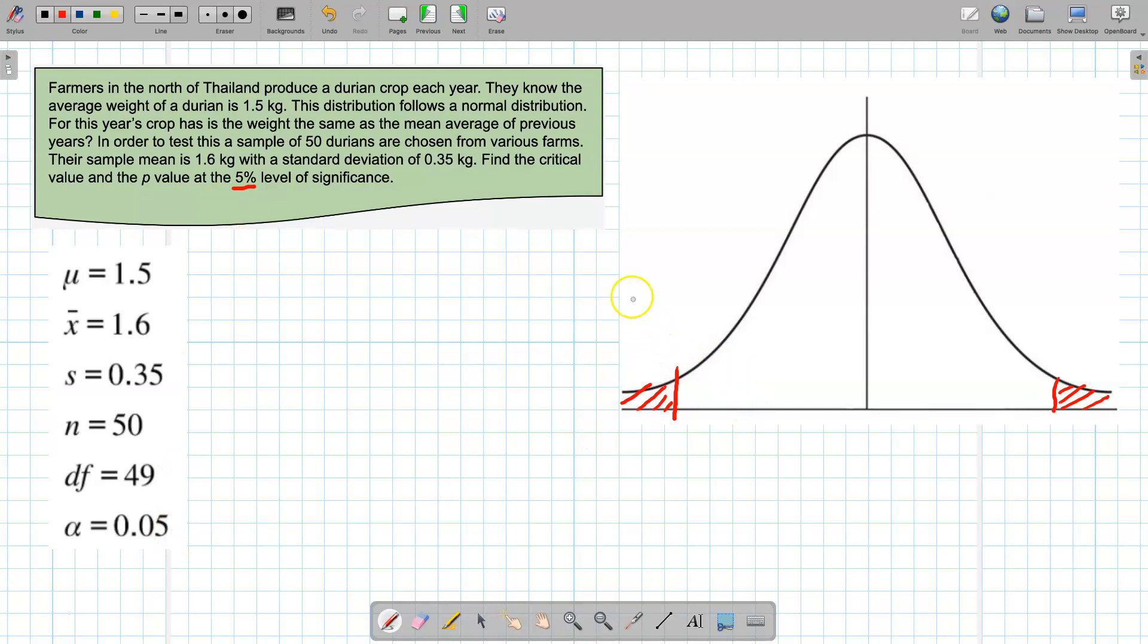Now that significance level on a one-tailed test would be, the whole of this would be 5%. On a two-tailed test, this is 2.5% or 0.025.